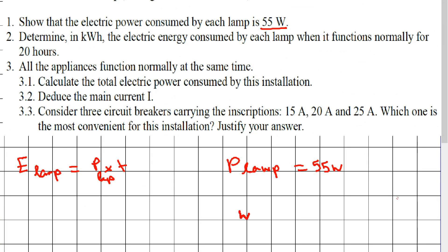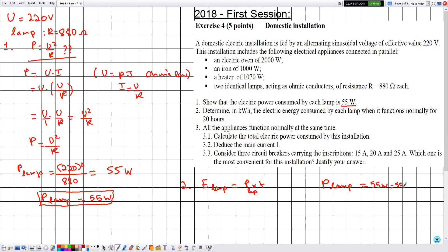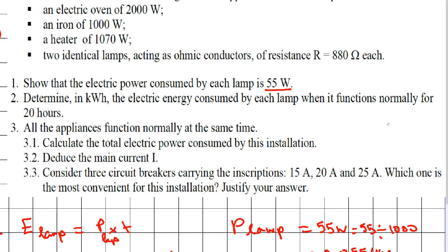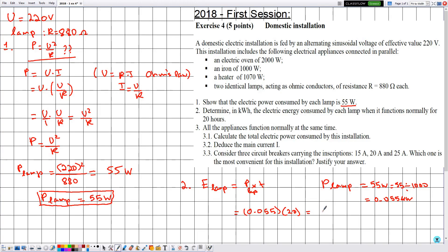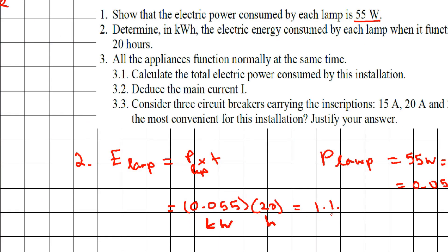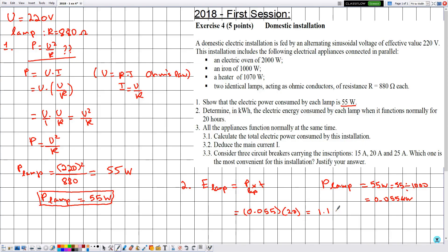To convert from watts to kilowatts we divide by 1000: 55 divided by 1000 equals 0.055 kilowatts. The electric energy of the lamp is therefore 0.055 multiplied by the time t, which is 20 hours. This gives 1.1. Since power is in kilowatts and time is in hours, the electric energy of the lamp is 1.1 kilowatt-hours.